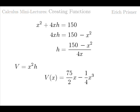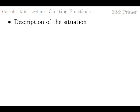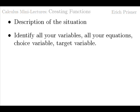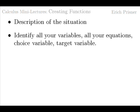Let me just review the steps done so far briefly. We start with a description of the situation and of the task, what you want to maximize or minimize. Next, you identify all your variables, all your equations and what the choice variable and what the target variable are. Check whether you have one equation less than variables.